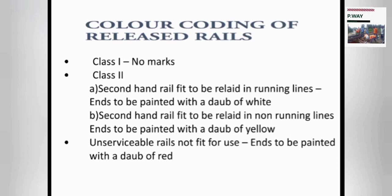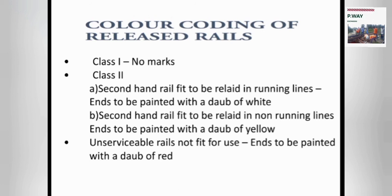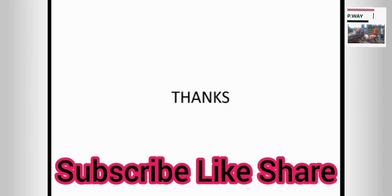Next, let's see the color coding of released rails. There is no paint mark on Class 1 rails. Class 2 second-hand rails which are fit for running lines are painted with white color on the end of the rails. Second-hand rails which are only fit for non-running lines are painted with yellow color on the ends. Unserviceable rails not fit for use are painted with red color.